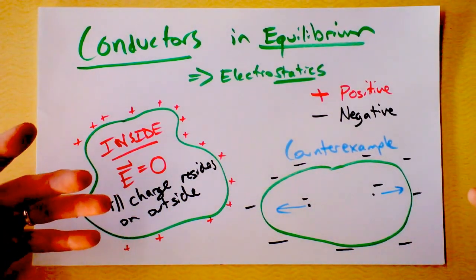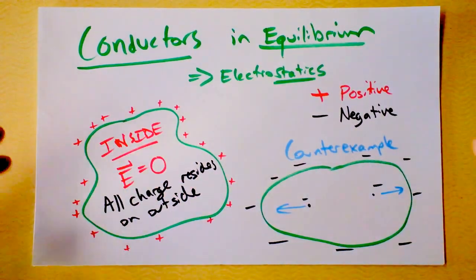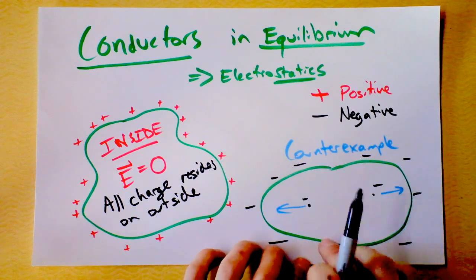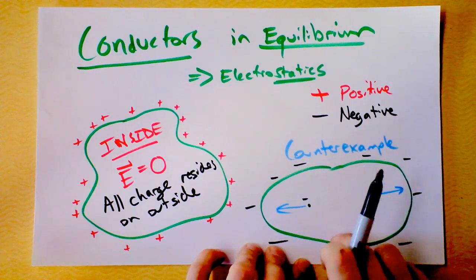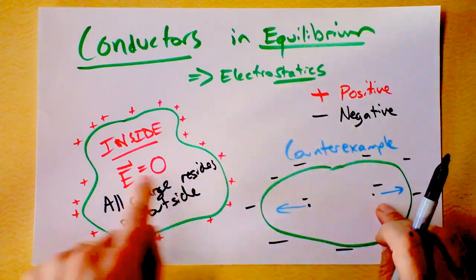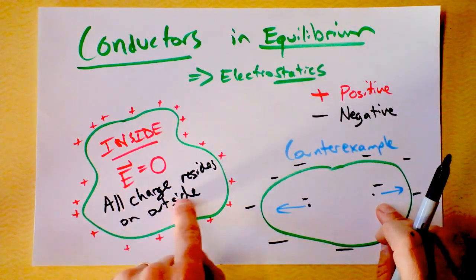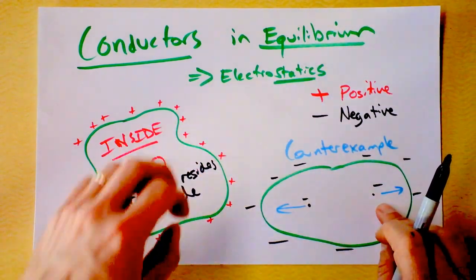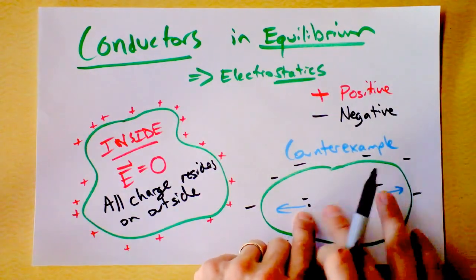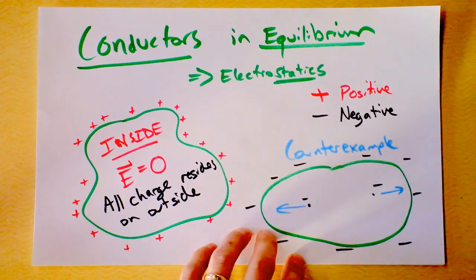Of course there are positive and negative charges inside, because all things we manipulate are made up of protons and electrons — and probably some neutrons too. But there is no net charge inside. All the net charge, if there is a net charge on the conductor, will reside on the outside of it. If you've got a couple of charges on the inside, they will repel each other and they will move.